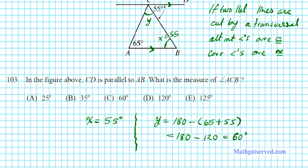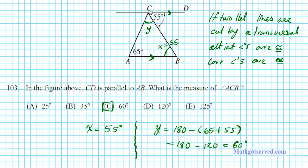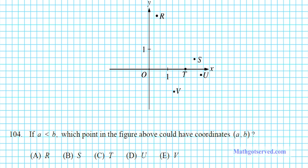So the final answer is 60 degrees — that's the measure of angle Y, which is angle ACB. Now let's take a look at problem 104. It says if A is less than B, which point in the figure above could have coordinates A, B? The options are R, S, T, U, or V.